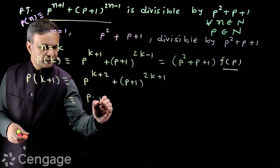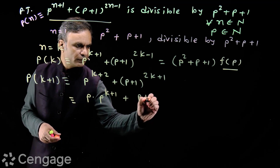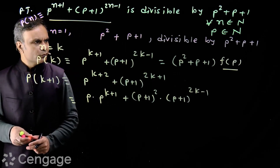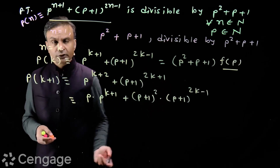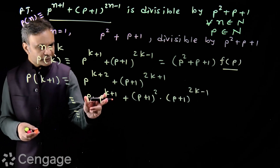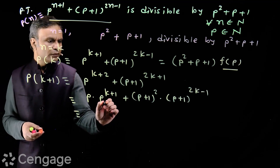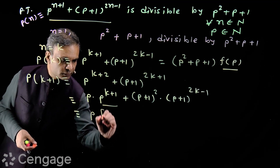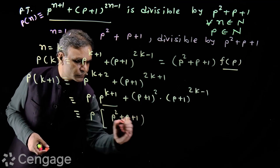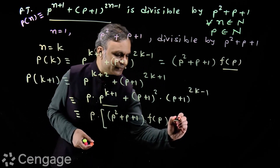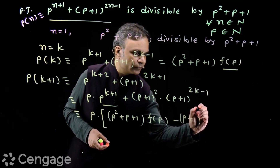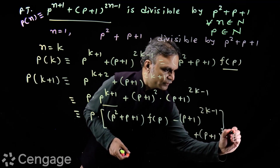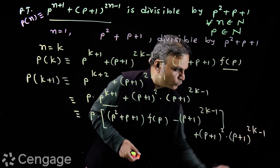We can write this expression as p × p^(k+1) + (p+1)² × (p+1)^(2k-1). I am trying to get the terms p^(k+1) and (p+1)^(2k-1). Here I can substitute the value of p^(k+1), which is (p²+p+1)×f(p) − (p+1)^(2k-1). So I have p × [(p²+p+1)×f(p) − (p+1)^(2k-1)] + (p+1)² × (p+1)^(2k-1).